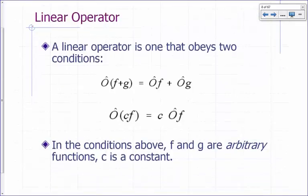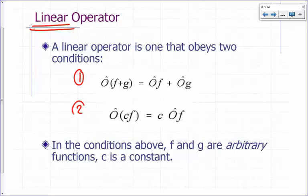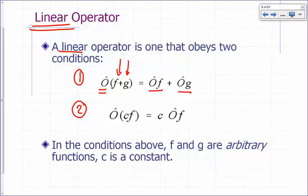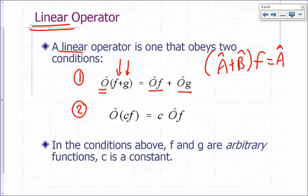Let's talk about linear operators. A linear operator is one that obeys two conditions. Condition one: if I apply operator O on a sum of two functions, F and G, then it should be equal to applying O on F and then applying O on G and just taking the sum. Don't confuse this with A plus B operating on F, which is AF plus BG.